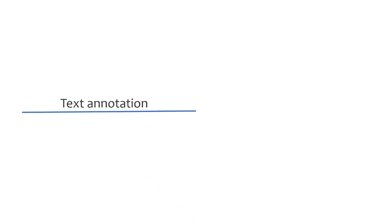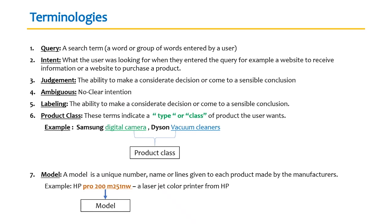Moving on from that, we are now going to look at the task overview. At the moment you'll be able to see text annotation and search relevance. Let's get a bit familiarized with the text annotation terminologies and lingos so that you have a basic idea of what you're getting into.